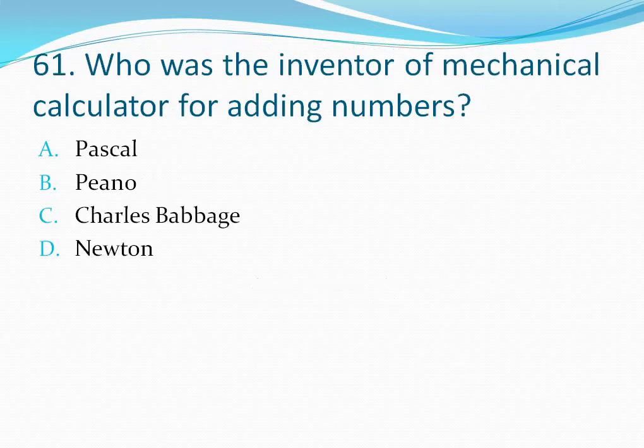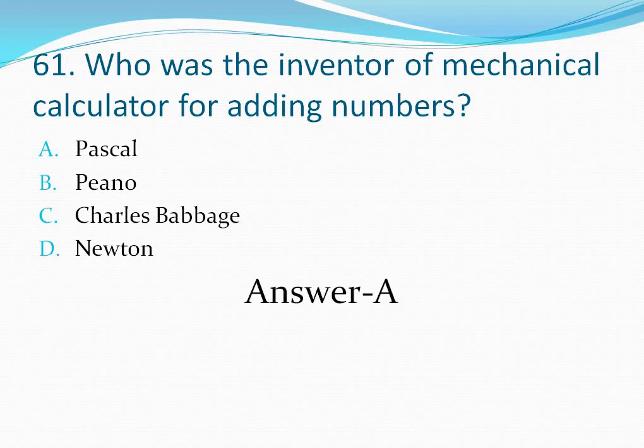Question number 61: Who was the inventor of the mechanical calculator for adding numbers? Your options are: option A Pascal, option B Pinot, option C Charles Babbage, option D Newton. Pascal invented the mechanical calculator for adding numbers, so the correct answer is option A.